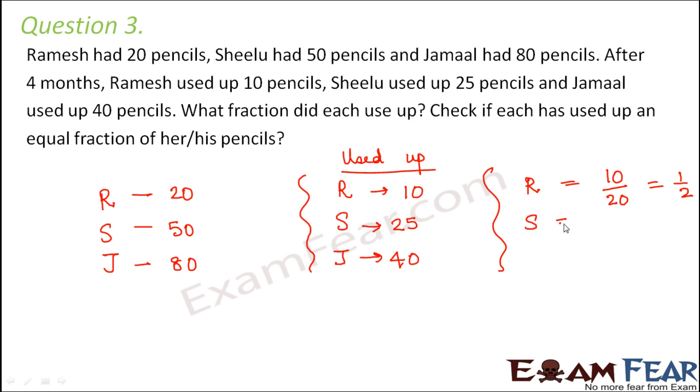Similarly, what fraction Sheelu used up? She used up 25 out of 50 which is again equal to 1 by 2. And what about Jamal? Jamal used up 40 out of 80 which is also again equal to 1 by 2.